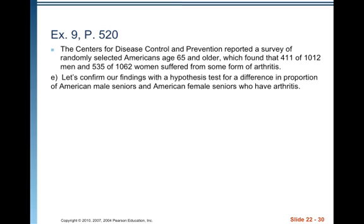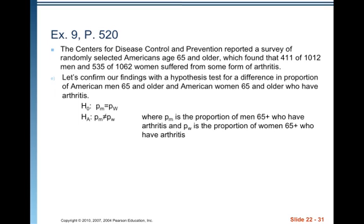Let's confirm our findings with a hypothesis test for a difference in proportion of American male seniors and American female seniors who have arthritis. I'm going to write the null hypothesis as PM equals PW versus the alternative PM is not equal to PW, where PM is the proportion of men 65 and older who have arthritis and PW is the proportion of women 65 and older who have arthritis. We're just testing for a difference on either side.